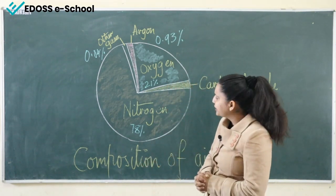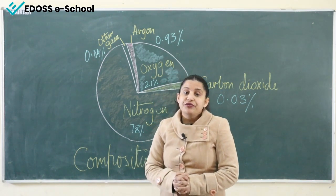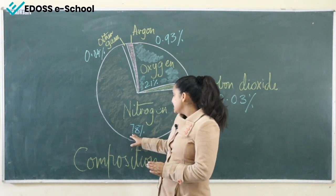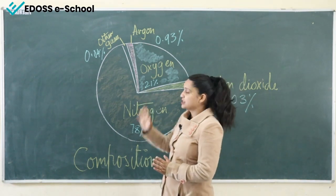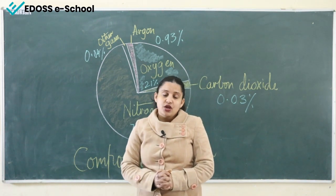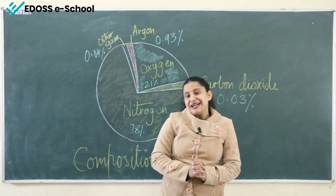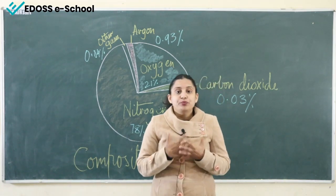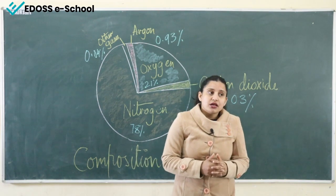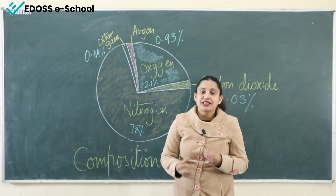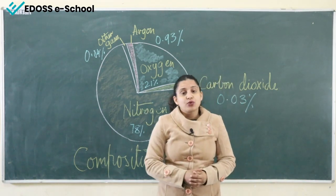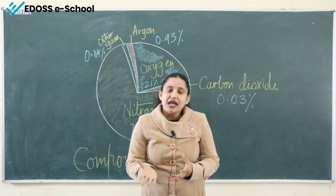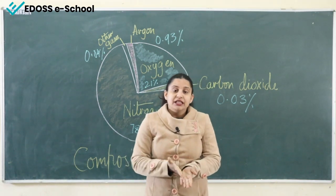Nitrogen is very important for the survival of plants and in the atmosphere it is 78%. The next important gas is oxygen. Oxygen is the second most plentiful gas in the atmosphere, and humans and animals need oxygen to breathe and to live. Green plants produce oxygen during the process of photosynthesis — when they prepare their food, they produce oxygen which is then used by human beings. This creates a balance: plants make oxygen and human beings inhale it and exhale carbon dioxide.